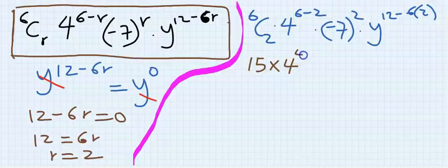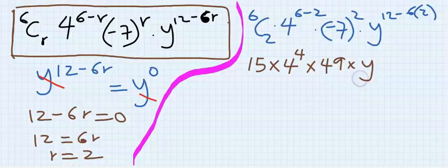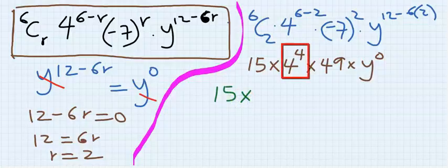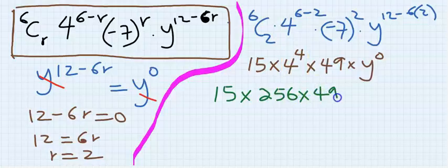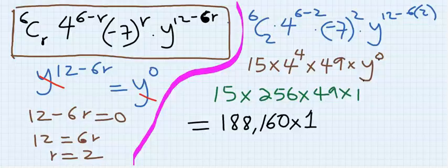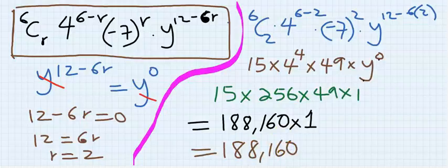We now calculate: 15 times 4 to the power of 4 times 49 times y to the power of zero. This is 15 times 256 times 49 times 1. Solving this gives 188,160 as the final answer — this is the constant term in the given binomial expansion.